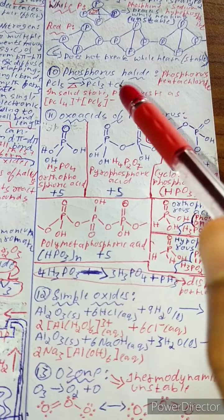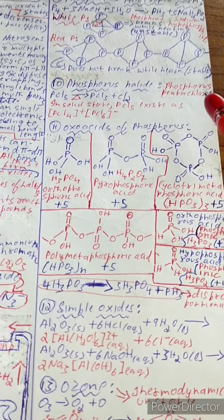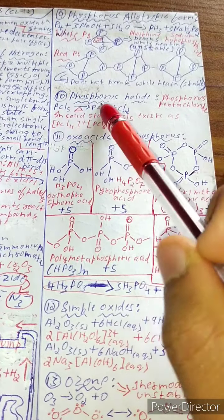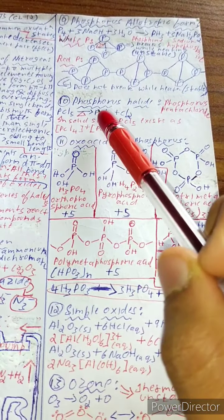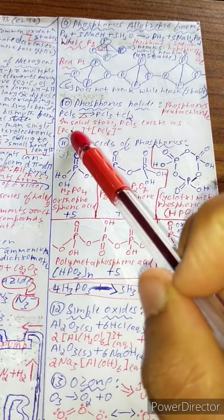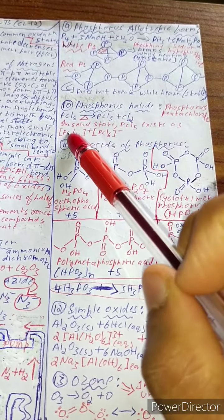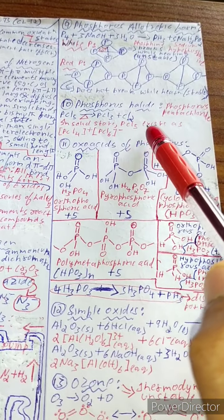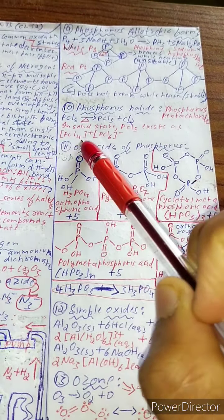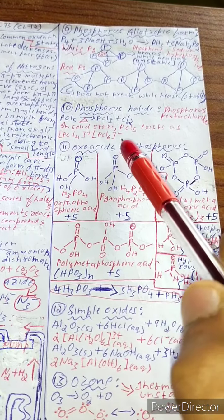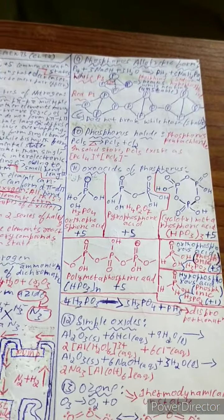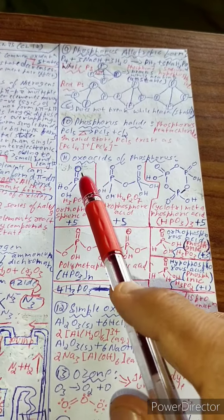Phosphorus halides: phosphorus pentachloride PCl₅. On heating, PCl₅ → PCl₃ + Cl₂. In the solid state, PCl₅ exists as [PCl₄]⁺[PCl₆]⁻.